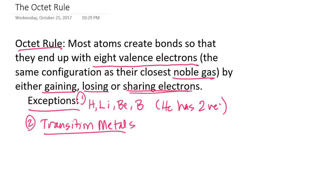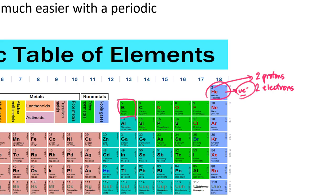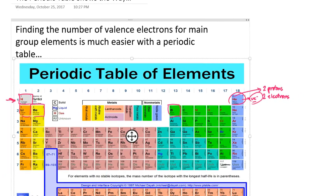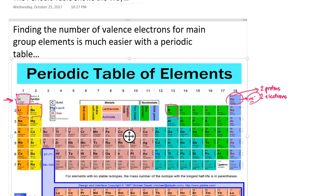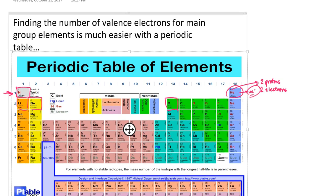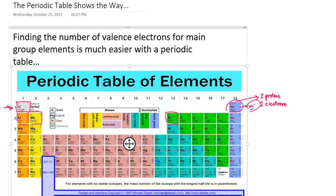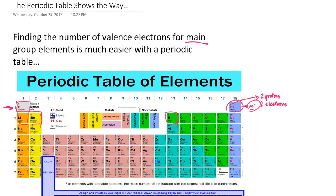To start this chapter, incorporating the octet rule and keeping track of valence electrons, we're going to look at ionic bonding first, then covalent bonding. Regardless of the type of bonding, a fundamental skill you'll need is to determine the number of valence electrons, particularly for elements in the main group.